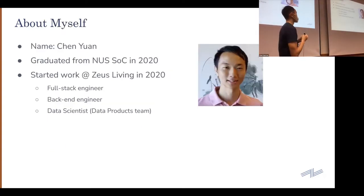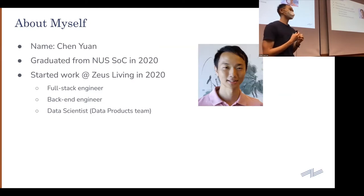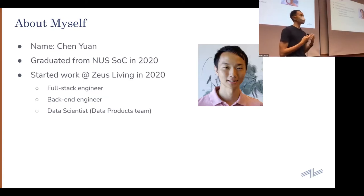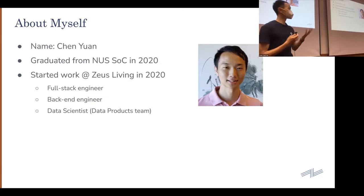About myself: my name is Chen Yuen. I graduated from School of Computing in 2020 from Business Analytics. When I started working at Zeus, I joined first as a full stack engineer. Even though I was from BA, a lot of times we develop apps as well. Through this process, I thought it was a good place to try out app development, even though most of the time I was doing data analysis using machine learning models for my coursework. I wanted to try something new, and Zeus provided me the opportunity.